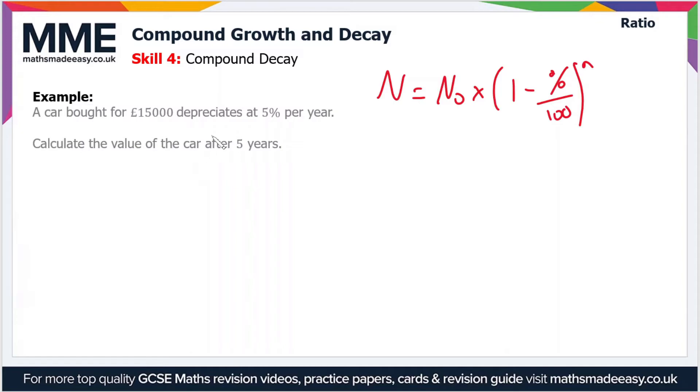So in this case, N₀ is £15,000, the percent is 5% per year, and n, small lowercase n, the time periods, is 5 years. So let's just substitute all of that into the equation. So the value after 5 years is 15,000...